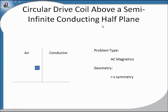This is a representative geometry similar to how we'll be simulating it in Quick Field. It shows a circular drive coil above a semi-infinite conducting half plane — this region is the air region and this is the conducting region. The coil can be imagined rotated about the Z-axis, so this is an example of RZ symmetry. Many of the models we'll be simulating will have this RZ symmetry, rotated about the Z-axis which is horizontal.